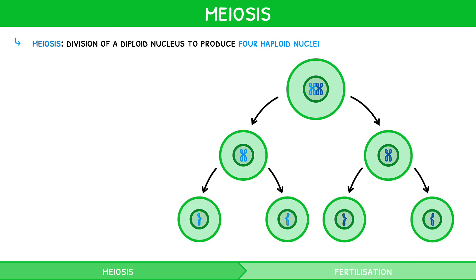Just like with mitosis, it is very important that you do not write four haploid cells. This is a very common mistake made by students.